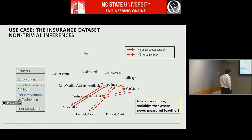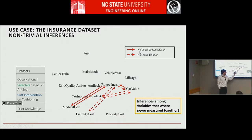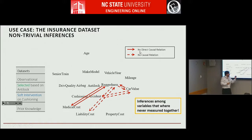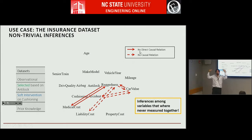On top of that, if you make other queries, you can discover something counterintuitive that very few algorithms are able to do. You can discover, for example, that medical costs doesn't cause ruggedness or vice versa. But notice that there is no data set where these two are simultaneously measured, so you make an inference between two things that are never in the same data set — you cannot even compute a correlation.